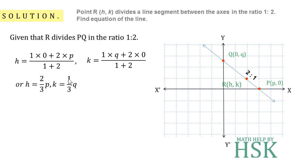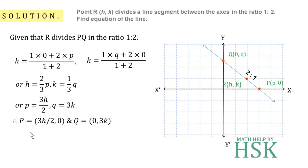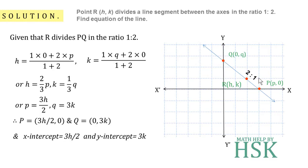Further, I can write p = 3h/2 and q = 3k. So the coordinates of point P and Q can be written as (3h/2, 0) and (0, 3k). If the coordinate on the x-axis and y-axis are known, this means the x-intercept of the line is 3h/2 and the y-intercept is 3k.